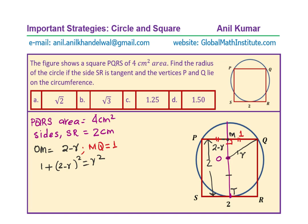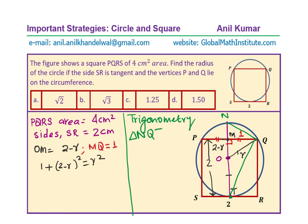We can also use trigonometry as an alternate strategy — Method 2. If we connect point T and Q, and the other end of the diameter with point Q, we have a triangle in the semicircle. So we see triangle NTQ, which has 90 degrees at Q, since this triangle is inscribed in a semicircle.